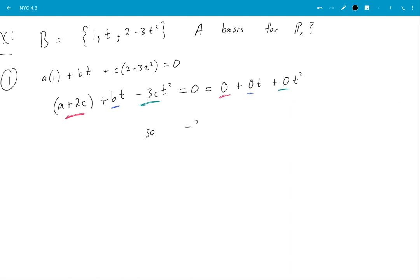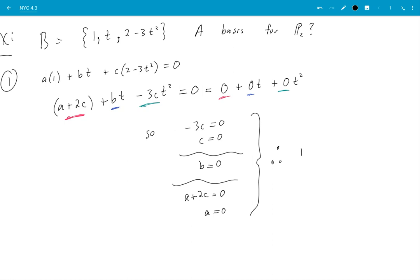So taking the green ones I get -3c is zero so c is zero, and taking the blue ones I get b is equal to zero, and then taking the red ones I get a+2c is zero. And I already know that c is zero so a is also zero. Just quickly, this red blue green thing I'm doing here, why am I allowed to do that?